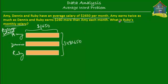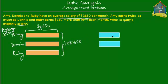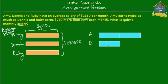What we know is that Amy earns twice as much as Dennis. So if this was Dennis and this was his salary — if Dennis earned this block of money — then Amy earns twice as much as Dennis, so this is how much Amy would earn. We take this block and copy it two times, because Amy's salary is twice as much as Dennis's salary. This is Dennis D, and this is Amy A. So Amy's salary is twice as much as Dennis's, and Ruby earns $260 more than Amy each month.